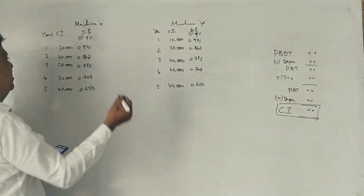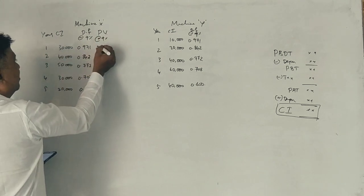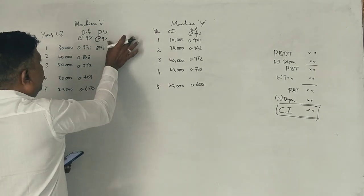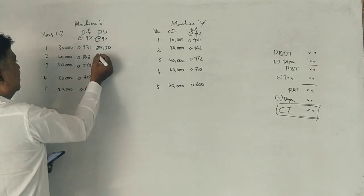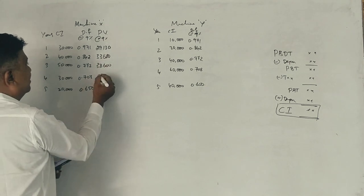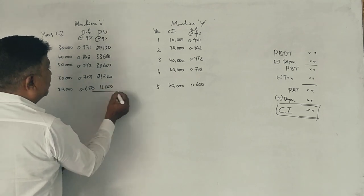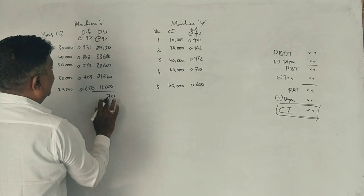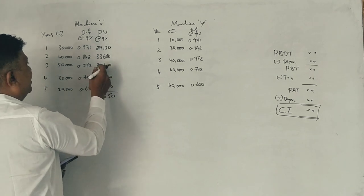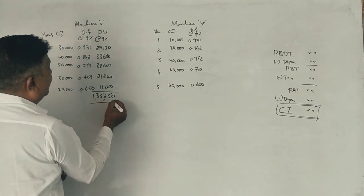Now please tell me what is the present value at 9%. 29,130. 33,680. 38,600. 21,240. 13,000. Now just check the totals. The total is 135,650.